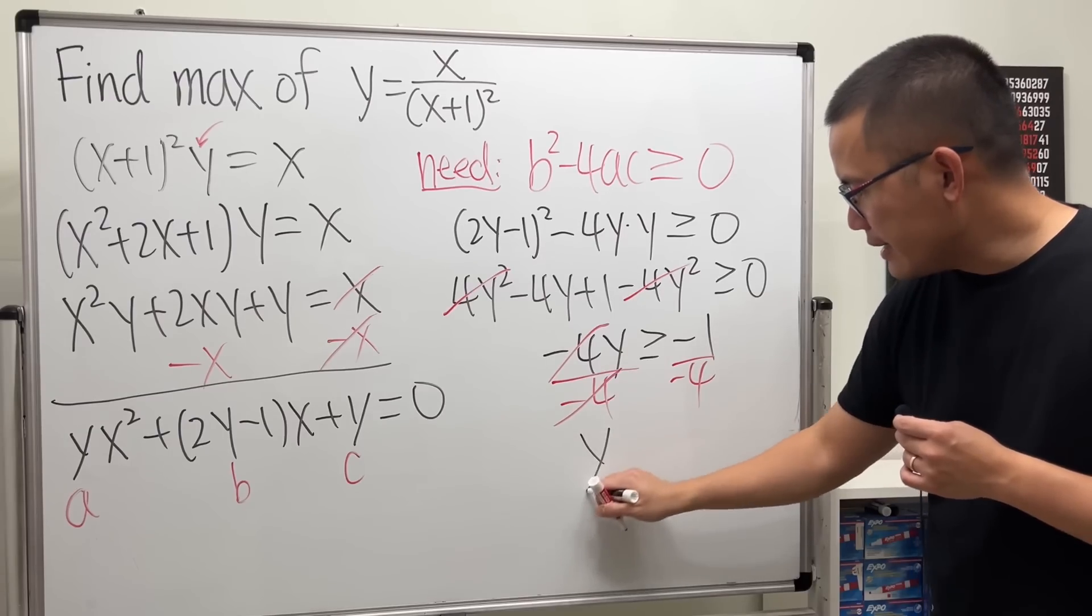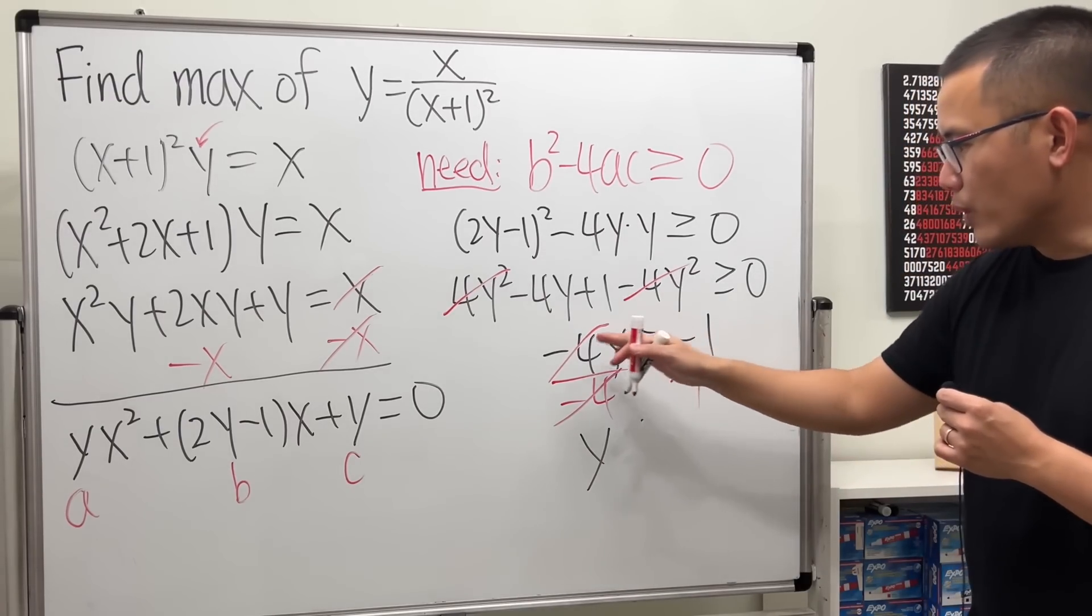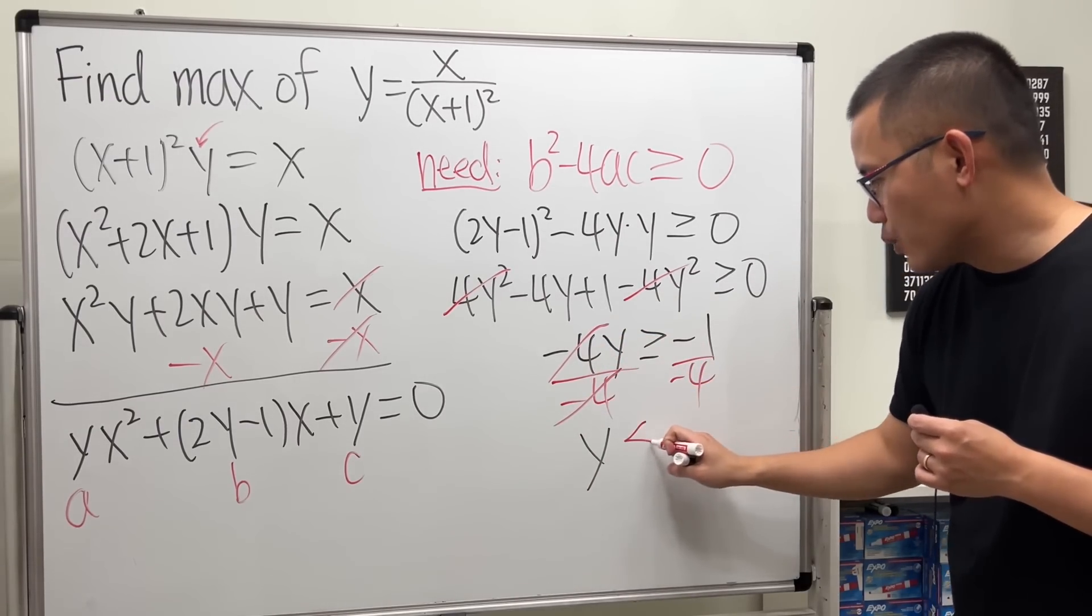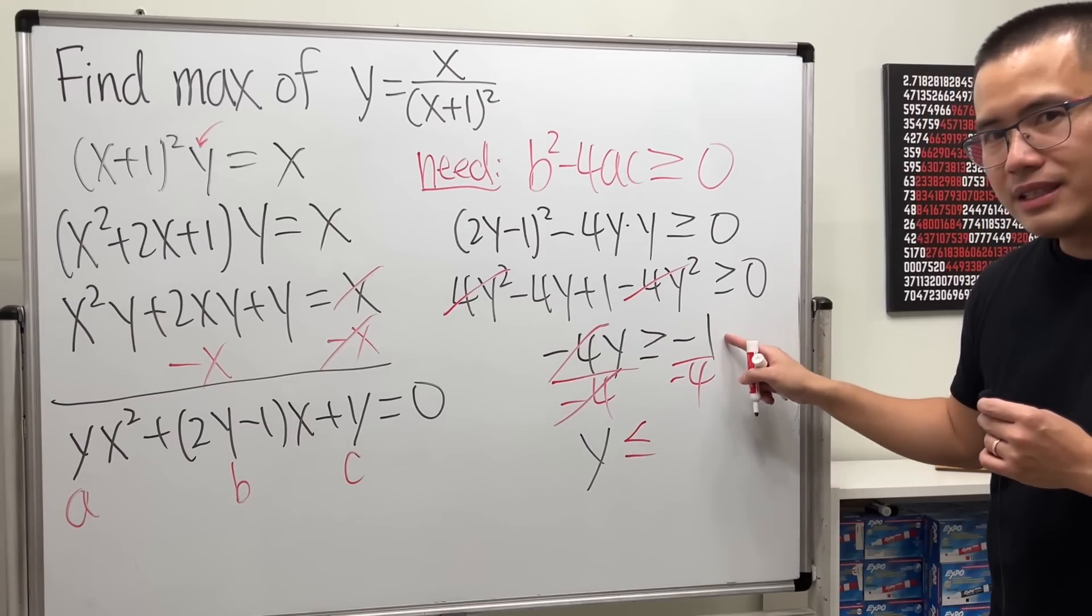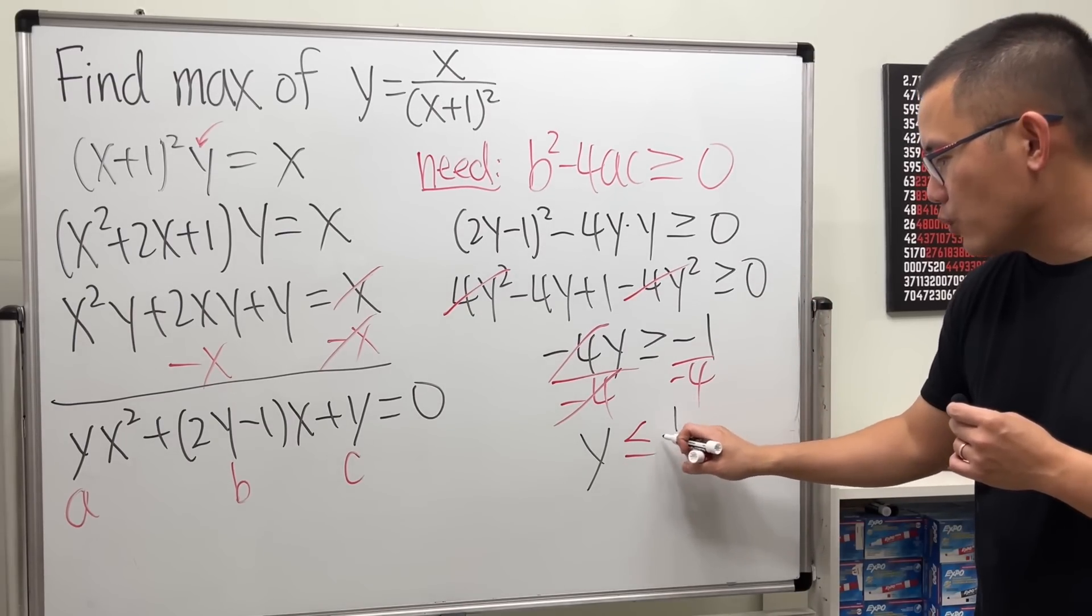So, we get y is, well, remember, when we divide both sides by a negative number, we flip the inequality. And then, negative 1 divided by negative 4 is 1 over 4.